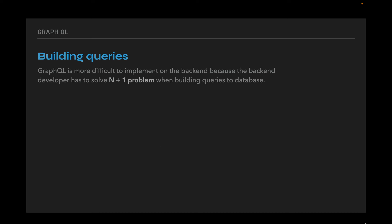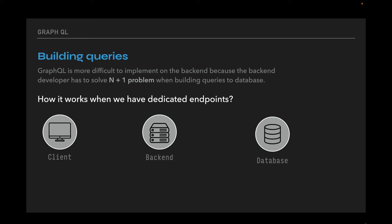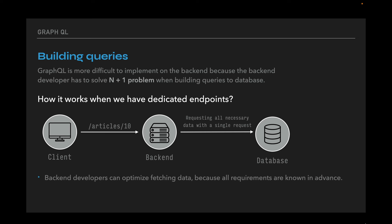Let's look at some problems of GraphQL in detail. The first problem is building queries on the backend side. GraphQL is more difficult to implement on the backend because developers have to solve the N+1 problem when building queries to the database. With dedicated endpoints, frontend developers cannot request data that is not implied to be requested, and backend developers can optimize fetching because all requirements are known in advance. However, endpoints are not flexible — we cannot query more or less data than the endpoint provides.